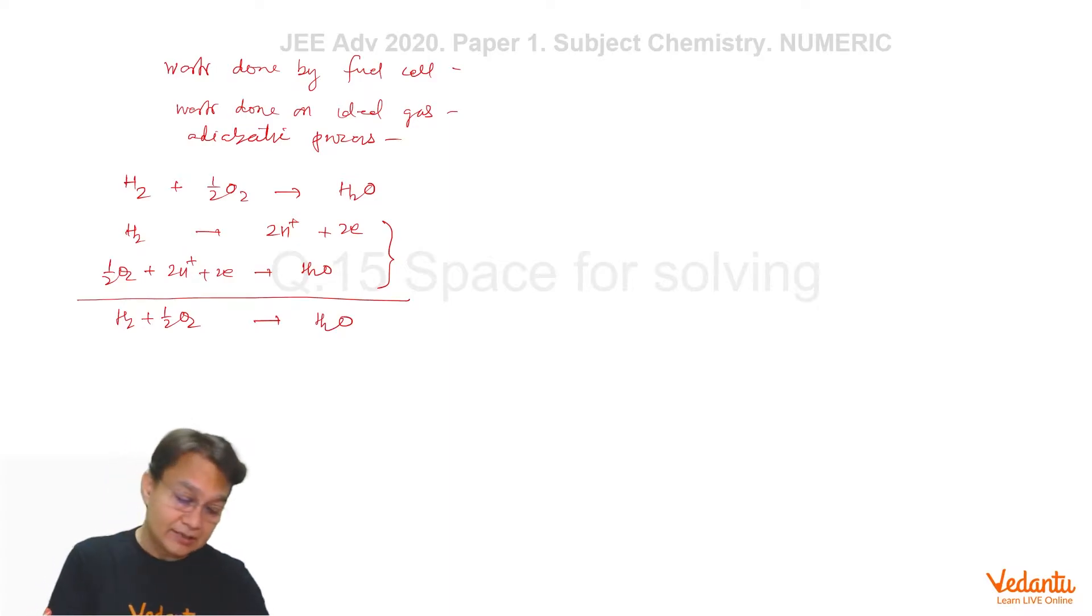In this fuel cell, this is acting as anode and this is acting as cathode, electrochemical principles. So that means E° of this cell will be E° of cathode minus E° of anode and if you remember the E° of cathode is given as 1.23 volt and minus 0.00 volt. So this comes out to be 1.23 volt.